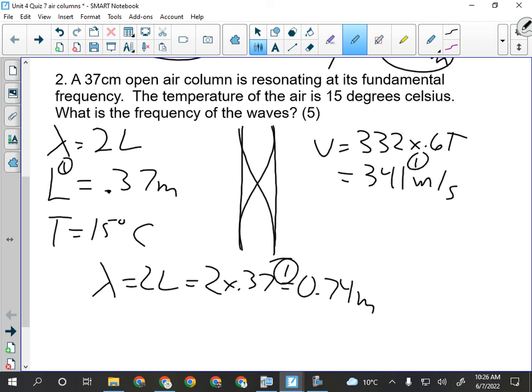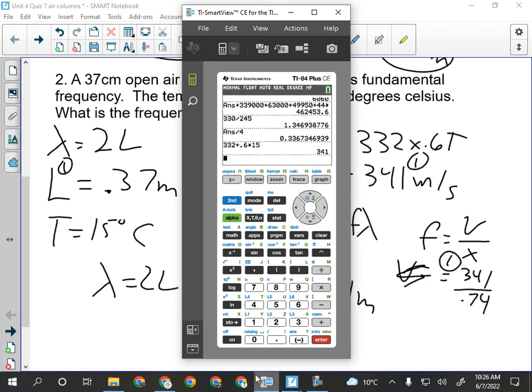And then we have to use V equals F times lambda. I'm looking for F, so F equals V over lambda. Which will be 341 divided by 0.74 meters. That will be their fourth mark.